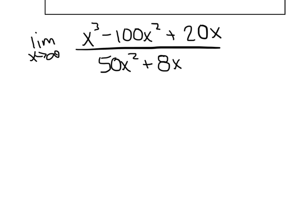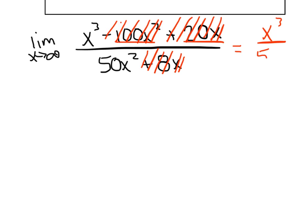But when we get in x equaling like millions and beyond, this term, believe it or not, becomes irrelevant. It has very little impact on the graph to the point where we say it's inconsequential. And so I'm just going to delete all those rascals. And on the bottom, I'm saying the plus 8x is irrelevant. And so this function really becomes x cubed over 50x squared.